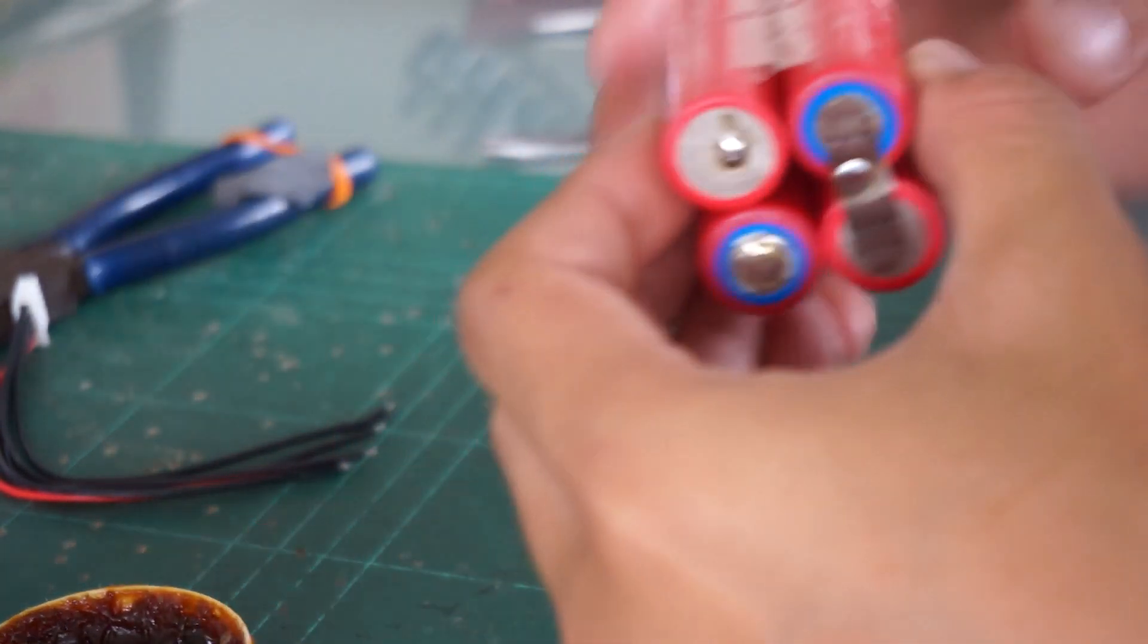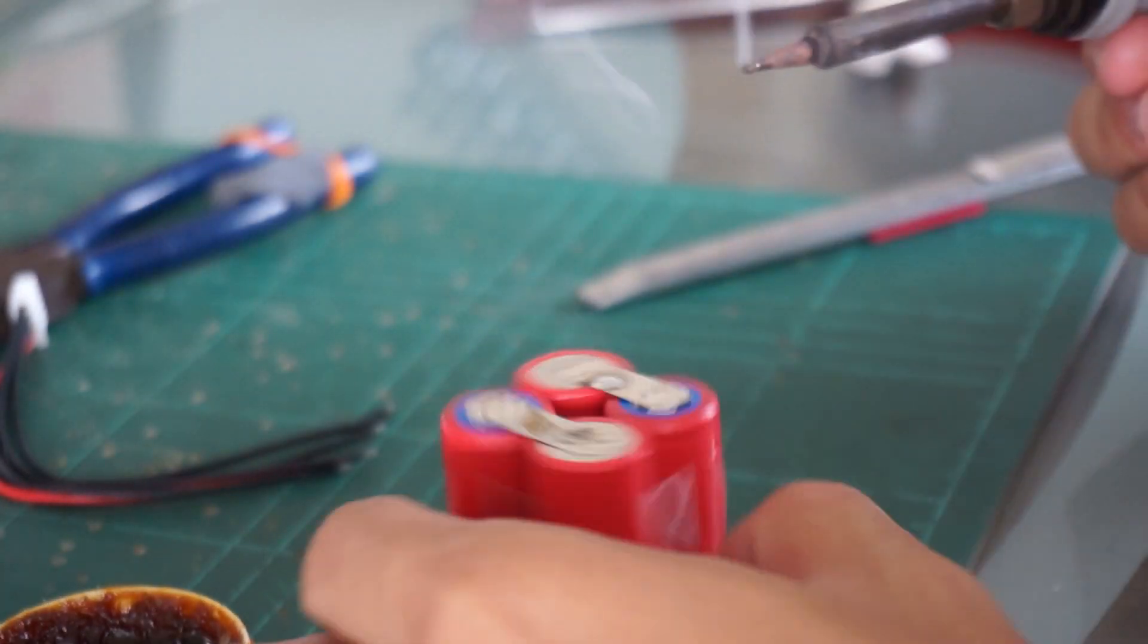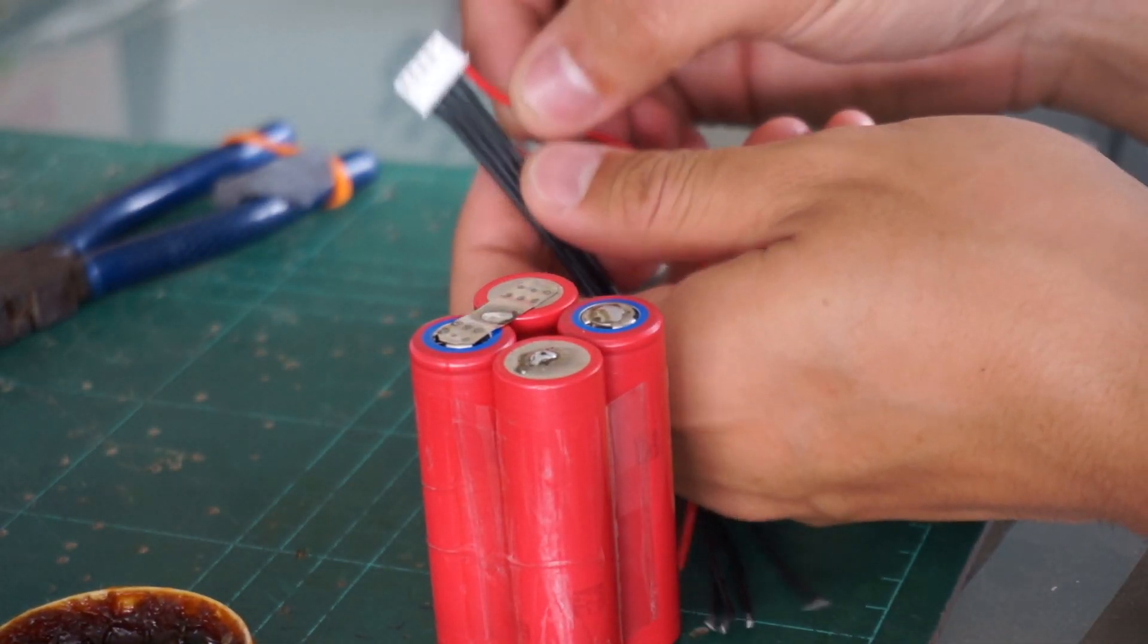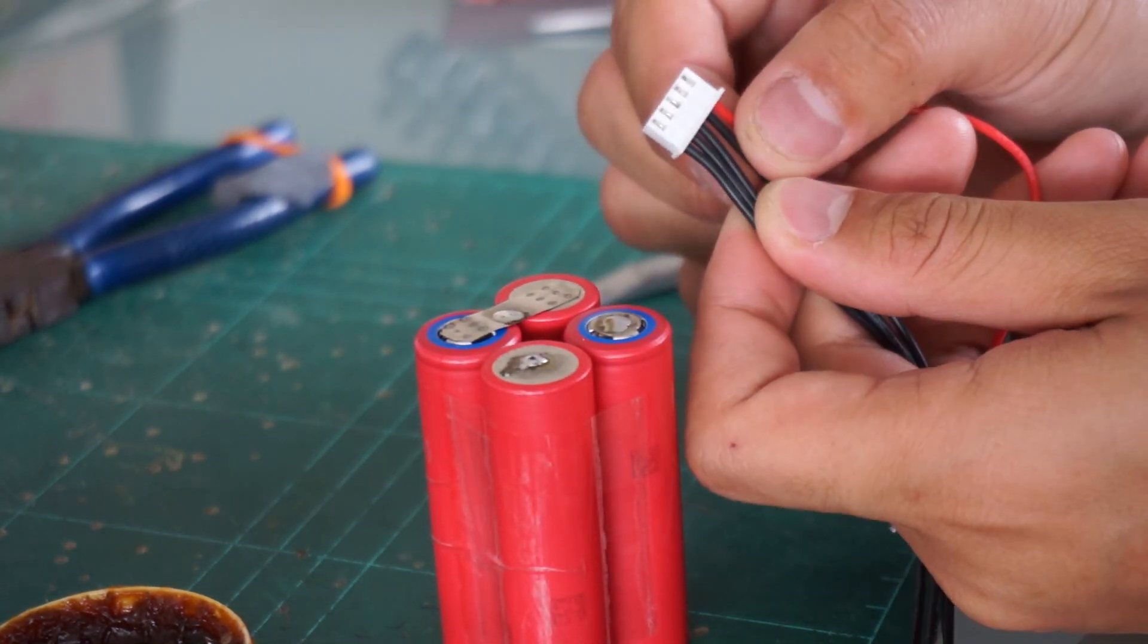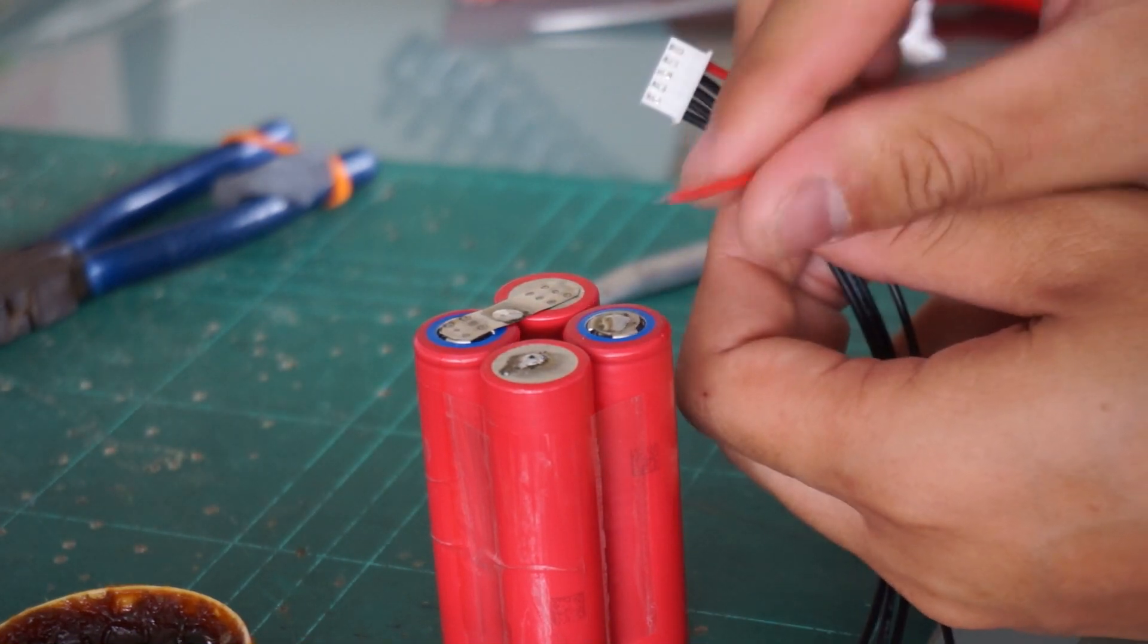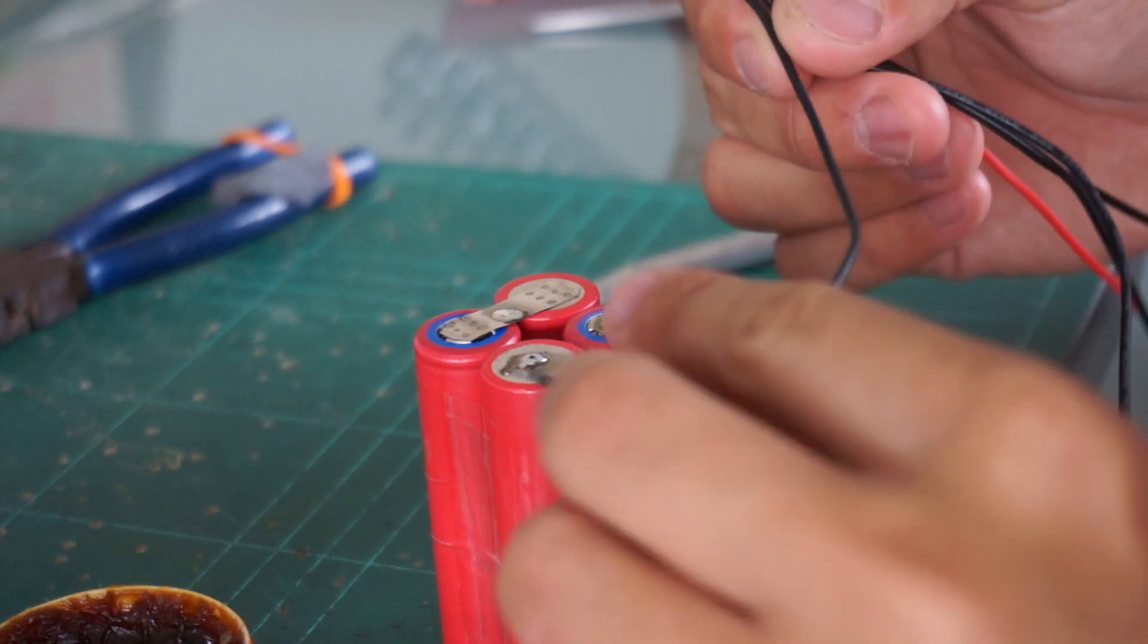On the other side, apply thermal flux again. Now time for the balance plug. To make it easy, we'll start from the positive terminal first. Positive terminal, second, third, fourth, and fifth. Positive will be for the positive, the negative, the last negative - the fifth one will be for the last negative.